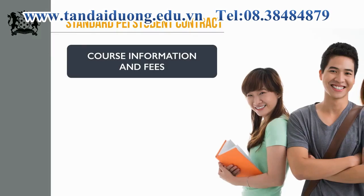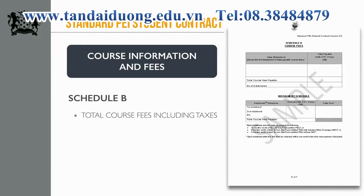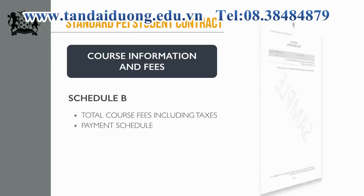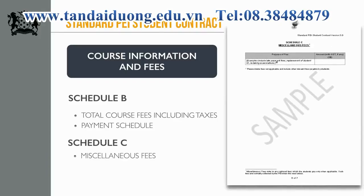Course fees are listed in Schedule B, which shows the total breakdown of course fees payable including taxes. If you have requested to pay your course fees via installments, the exact payment schedule will also be displayed below Schedule B. It is very important that any installment plan is reflected here, so do get in touch with us if yours is not reflected in the contract. Schedule C is a comprehensive table of miscellaneous fees. It shows all optional fees that may be collected from you when applicable. These fees are non-compulsory and non-standard, and may not be charged at all even through the completion of the course.